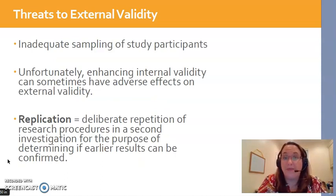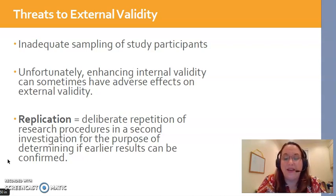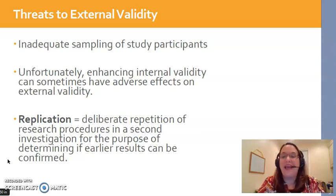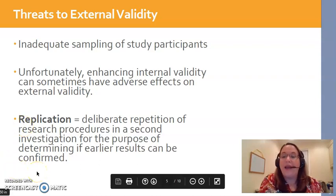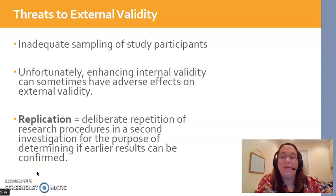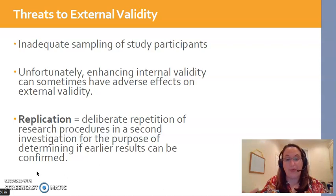External validity has to do with generalizability — basically, which types of people can I take these findings and generalize them to? For example, if I studied only Caucasian men, I can't take those results and think they're going to apply to women, Asian women, or even Asian men, because that's not the sample I studied. If a study has a wide variety of participants, we're more likely to generalize the outcomes to bigger groups of people. One way to increase external validity is through replication — repeating a study in a different population and setting to widen the types of people we've studied.